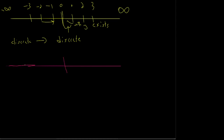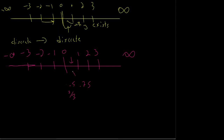The real number line goes from 0 to 1, to 2, to 3, and all the way up to positive infinity and negative infinity. They're built off of the integers, but in here I can have 0.5, 0.75, 2/3. In fact, in between any two numbers here I can always wedge another number — in fact, I can wedge an infinite amount of numbers between any two.